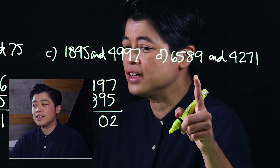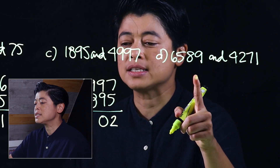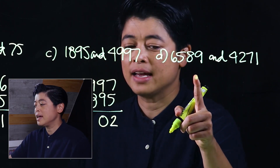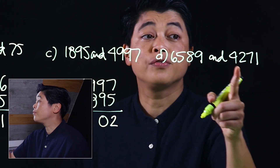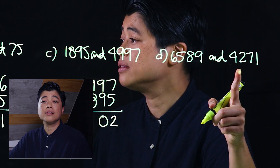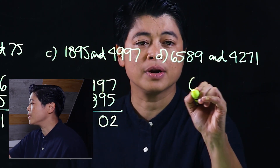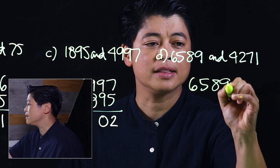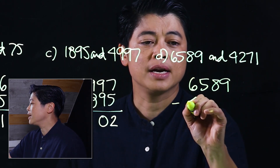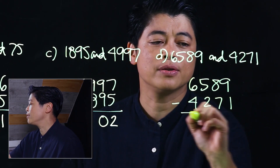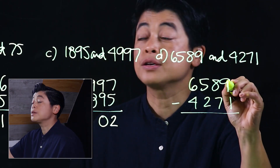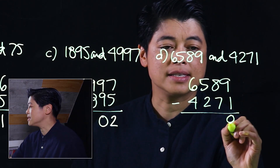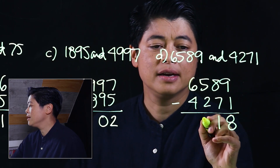The difference between six thousand five hundred eighty-nine and four thousand two hundred seventy-one — the bigger number on top: six thousand five hundred eighty-nine minus four thousand two hundred seventy-one. Subtracting from the right: eight minus one is seven, eight minus seven is one... giving us three and two.